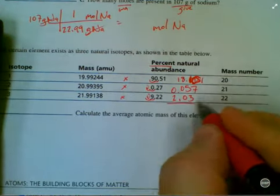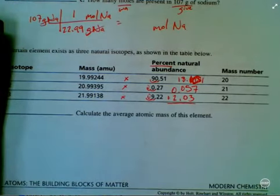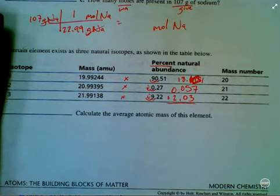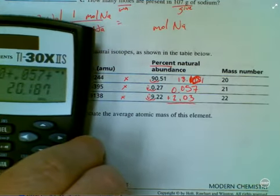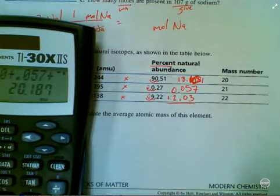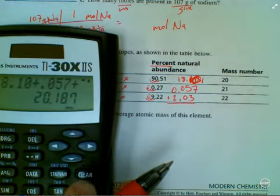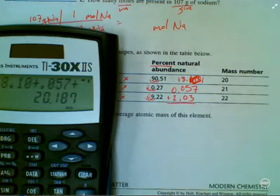So next up, I'm going to add all these terms together. So 18.10 plus 0.057 plus 2.03. Let's see. You guys see that? So I get 20.187.